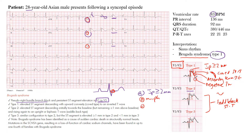In type 2, we have J point elevation of at least two millimeters, a saddleback morphology at point B, and at point C the terminal ST elevation is at least one millimeter. At point D, importantly, the T wave is positive — that distinguishes it from type 1.